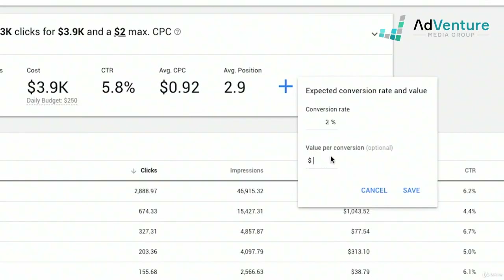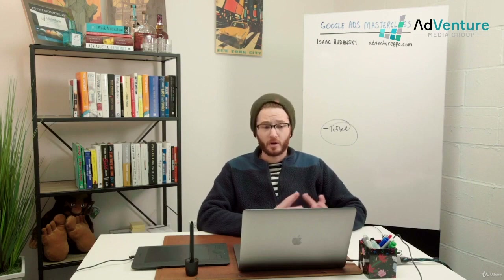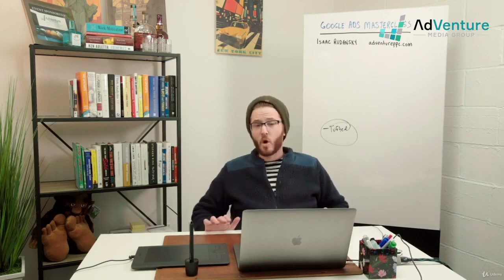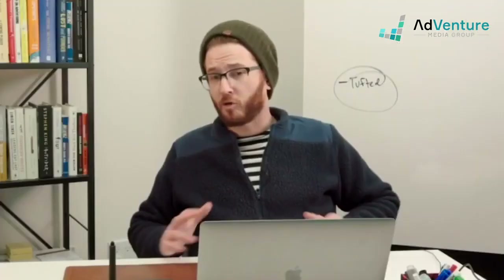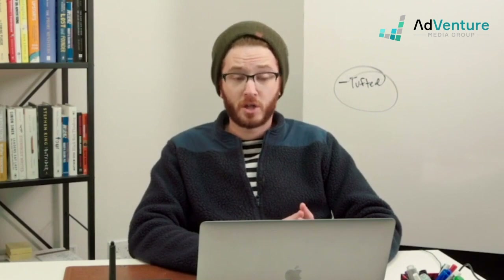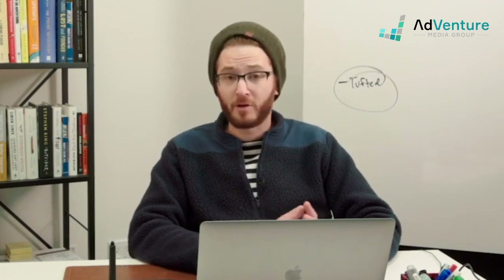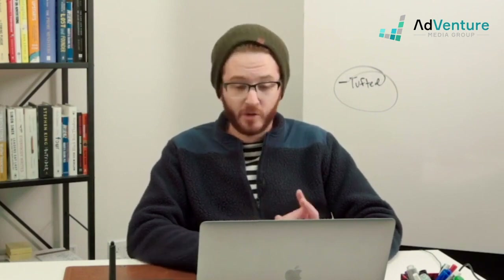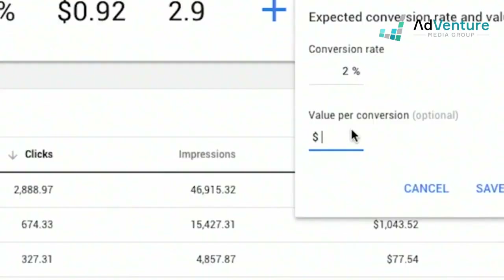So we'll do 2% conversion rate. The value per conversion can be whatever you want — it could include all your costs, so it could be total profit, gross revenue, or your average order value. Poppin's average order value is probably something around $350.